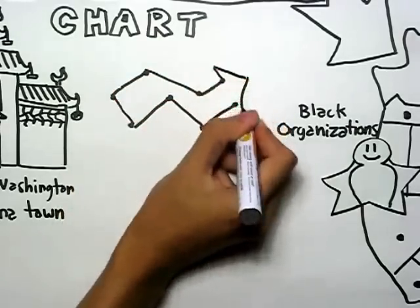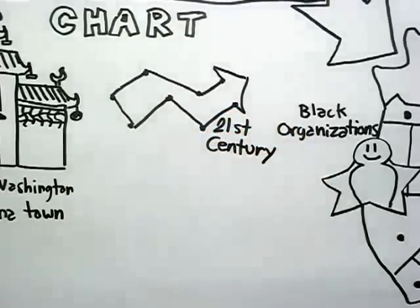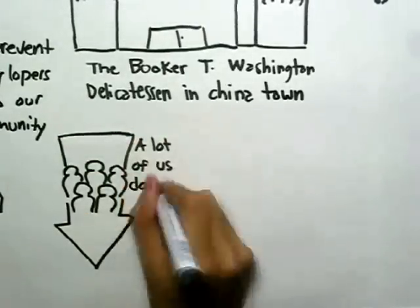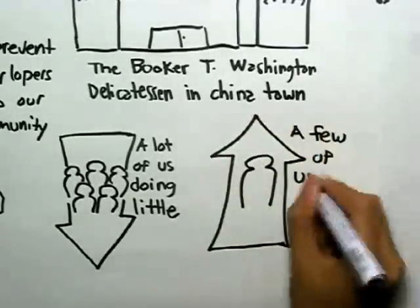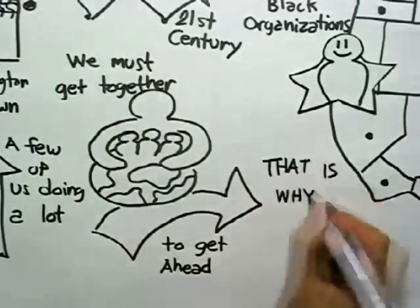That must be the movement for our people in the 21st century. We need a lot of us doing a little instead of a few of us doing a lot. We need to get together to get ahead. That is why we must network.